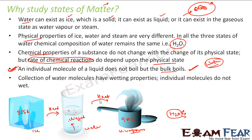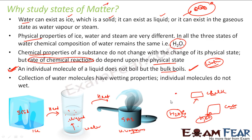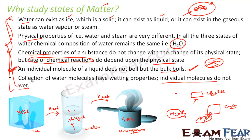Similarly, if you put water on chalk or on cloth — which is a carbon compound — it will get wet. But an individual molecule of water doesn't wet; it's the collection of water that has the wetting property. All these things we will understand when we go through this chapter — these questions will all be answered.